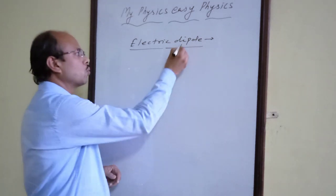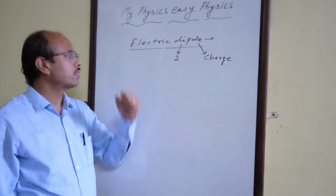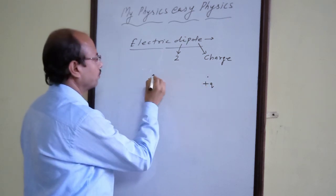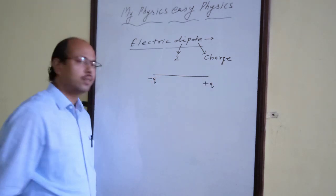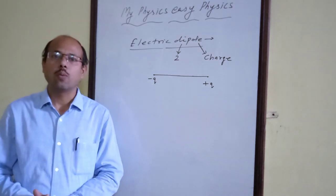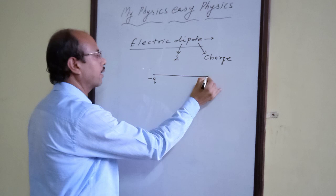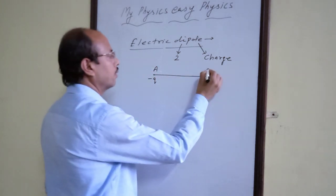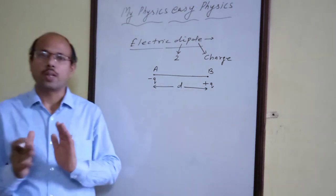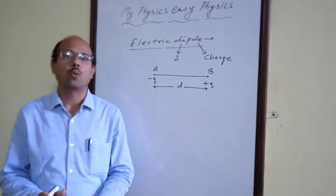As the name suggests, 'di' means two, so it is a system of two charges. From the diagram it is clear that there are two charges — one charge is minus q and the other is plus q. A system of two equal and opposite charges placed at a small distance apart is defined as an electric dipole. Let us suppose this point is A, this point is B, and the two charges are placed a small distance d apart.